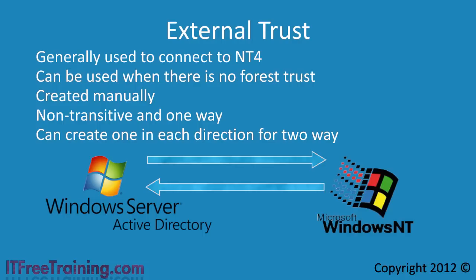This covers all the different trusts in Active Directory. In most cases you can see a trust relationship will be created for you automatically. The trust relationship is in both directions and is transitive, so new domains and child domains will automatically have access to each other. All the hard work is done for you. Two way trusts are easy to understand and use — resources are shared both ways. In some cases you may have to deal with a one way trust.